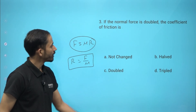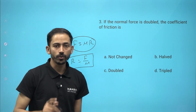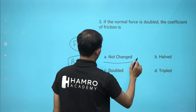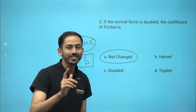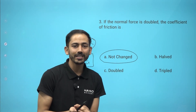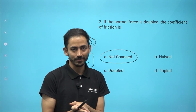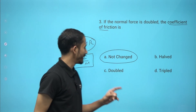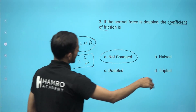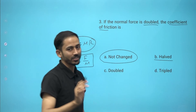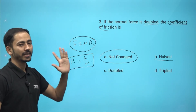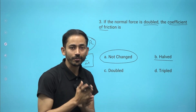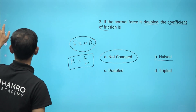So mu and R are not inversely related — mu is a constant quantity. If the normal force is doubled, the coefficient of friction does not change. It remains constant because it depends only on the nature of the two surfaces in contact. Lubrication may affect it, but normal force does not change mu.